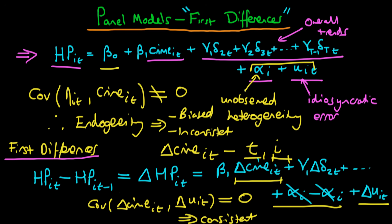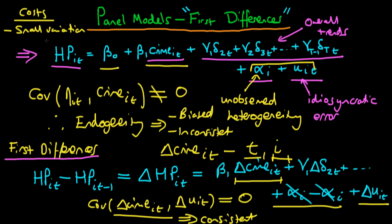The first differences estimator seems like a good approach — under not very restrictive assumptions we should get consistent estimators. But there are some costs, as we should expect. One cost is that even though there may be significant variation in the crime rate across cities and time in levels, there may actually be quite small variation in the first difference of crime rate. This small variation in the differenced independent variable means first differences estimators can have high standard errors, making inference on the first difference system harder.